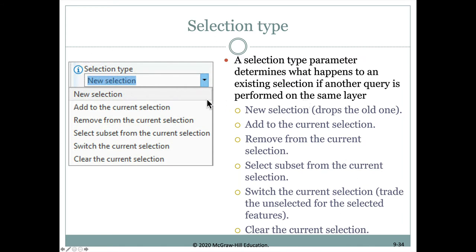If we're making a new selection, we use the selection type drop-down menu and choose 'new selection.' Sometimes we select some polygons and then want to select different polygons elsewhere, so we can add to the current selection instead. Sometimes we want to remove one — maybe we accidentally grabbed one — so we choose 'remove from current selection' and click that polygon to remove it. We also have the option to clear the current selection entirely.